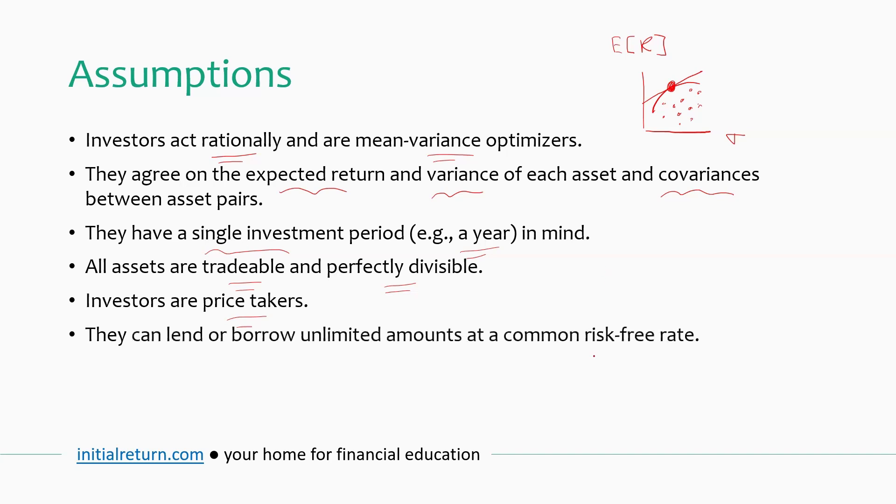Next one is about the risk-free rate. So the standard version assumes that we can either lend or borrow as much as we like at the risk-free rate. Again, this is not very realistic. I can't go to a bank and ask to borrow a million dollars at the risk-free rate. But this assumption is necessary for the model to hold. There are extensions of the model, for example, which assume different lending and borrowing rates rather than a single one. So some of this can be relaxed in the extended versions.